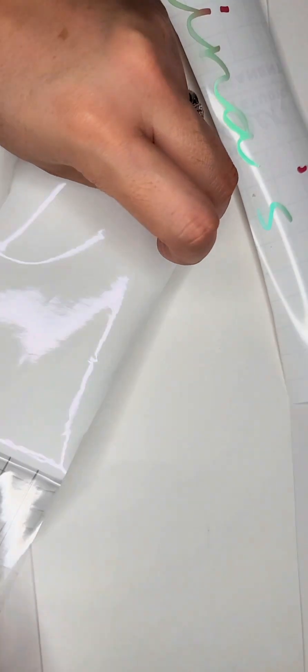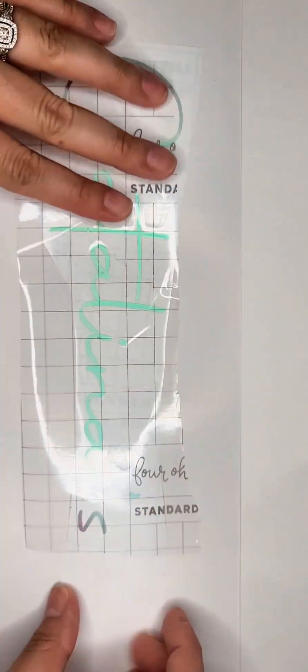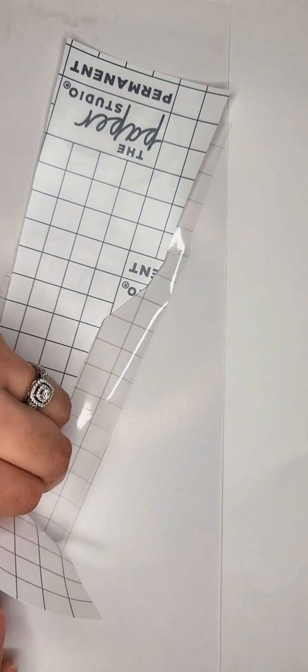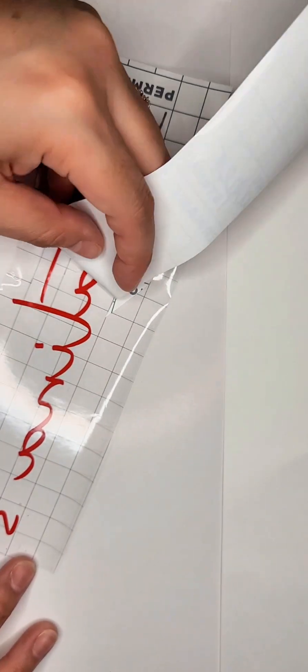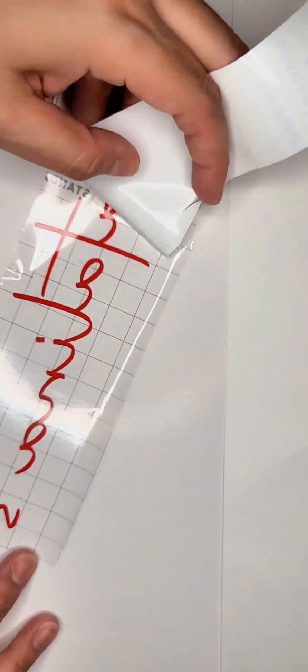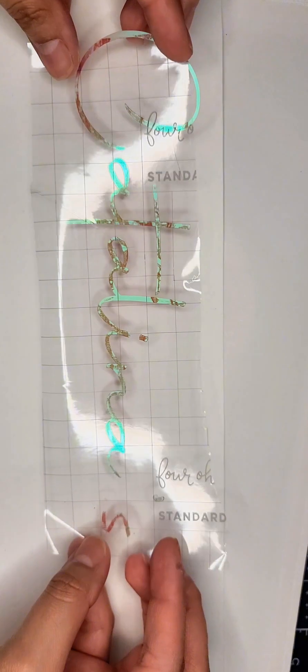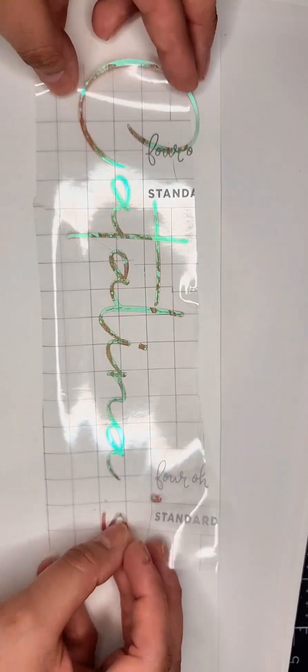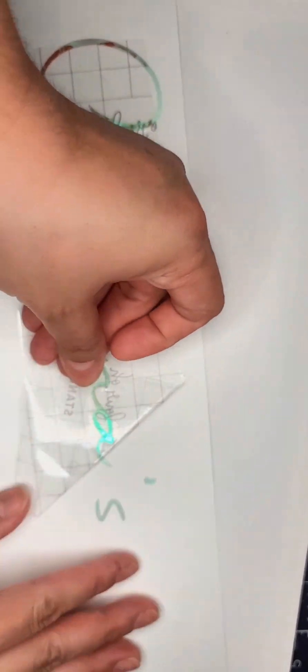I also use paper studio standard grip transfer tape. I then transfer my vinyl to the poster board piece. I personally like the lightness of the paper studio transfer tape and how easy it is to transfer onto paper cardstock.